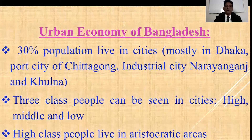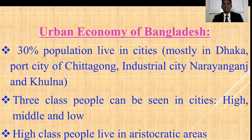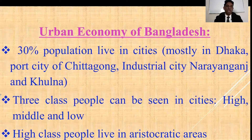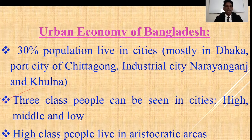Now, urban economy of Bangladesh. Urban means city area, town area. The first point: 30% of the population live in cities, mostly in Dhaka, the port city of Chattagram, industrial city Narayanganj, and Khulna. Second point: three classes of people can be seen in cities - high, middle, and low. And high-class people live in aristocratic areas.